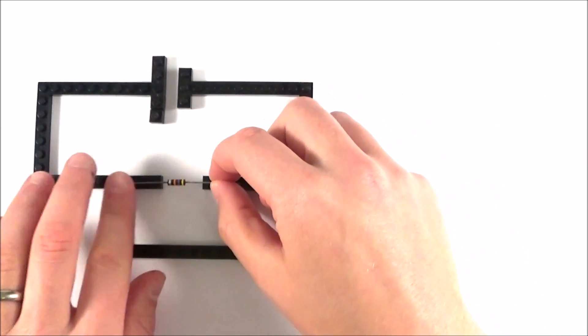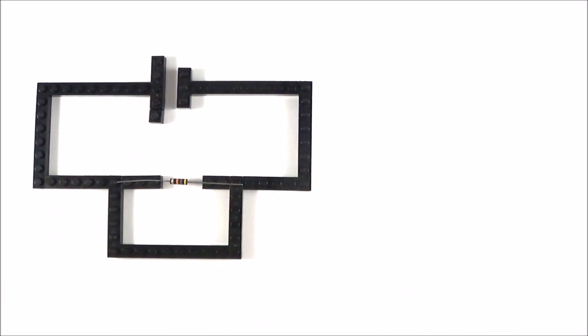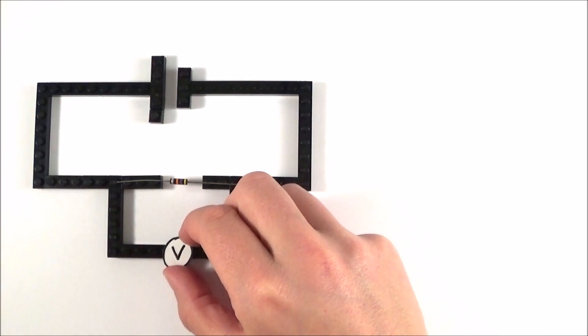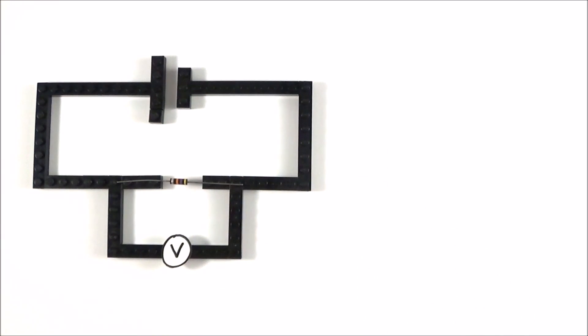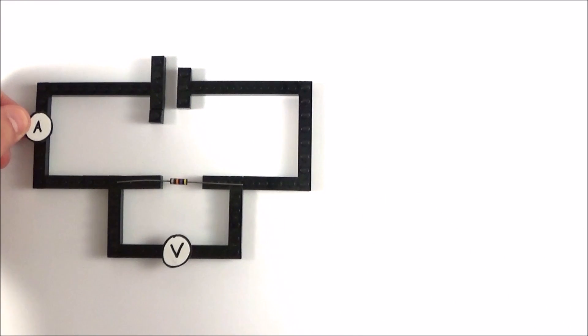So first of all I'm going to start with a resistor and I'm going to put the resistor across that little gap. Now what we can then do is we can maybe start to measure things about it. We can maybe use a voltmeter to measure the potential difference across that component, and if we have an ammeter we can put the ammeter in series with the component to measure the current that's actually passing through it.